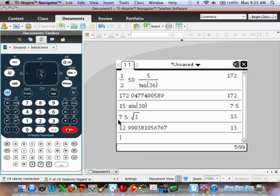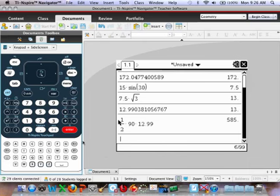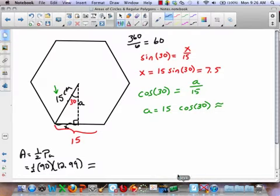All right, all we have to do now is multiply that out. So that's one half times 90 times 12.99. It gives us 584.55. Where is it? Okay, that's where I'm going to stop us today.